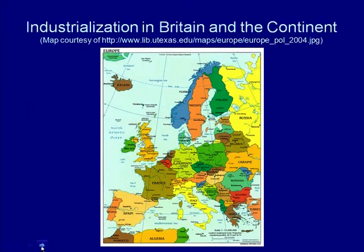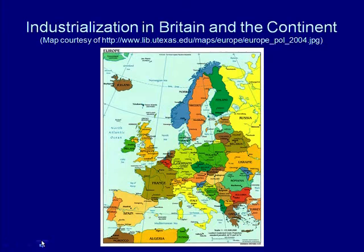Here, on a map showing industrialization in Britain and the continent, we can see I'm circling the United Kingdom. You can see the size of the United Kingdom compared to Russia or even France. England is small — a compact market — and is close to the ocean, which allows goods to be traded overseas and raw materials like cotton to be brought in from India. Industrialization doesn't really come to the continent until the 19th century, a good 60 or 70 years after England.